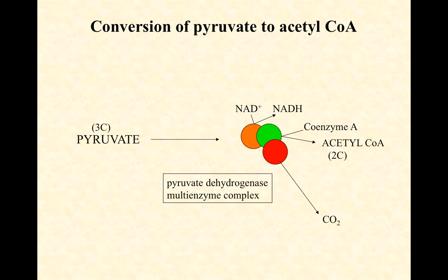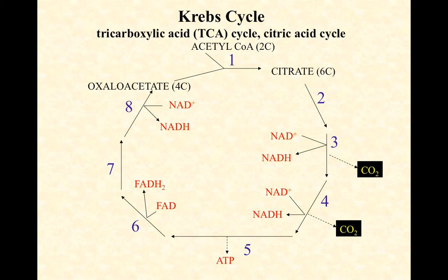Now we have our acetyl-CoAs and we can push them into the Krebs cycle. Just like with glycolysis, I don't want you to memorize all the enzymes and all the intermediates — same thing here. I'll highlight a few that you should know. The Krebs cycle, as you'll notice, is not a linear pathway — it's cyclic, and we'll see how that happens in a minute.